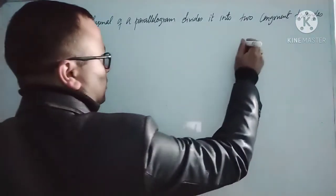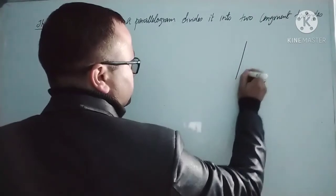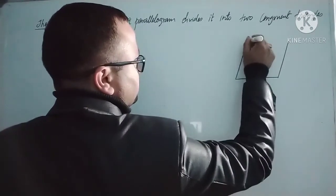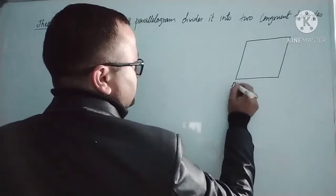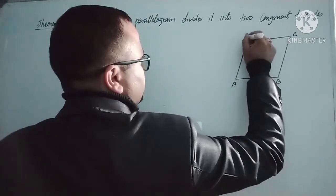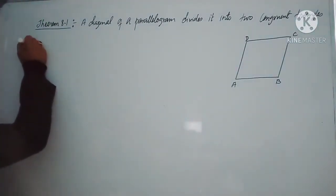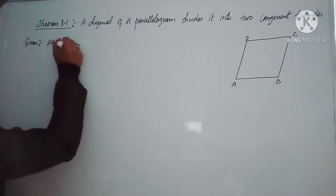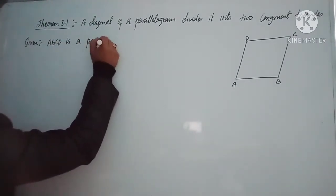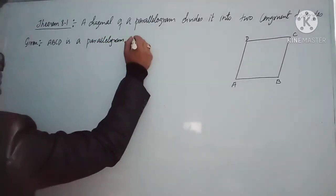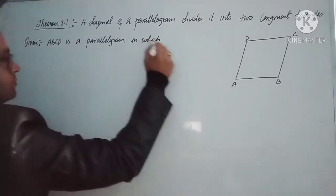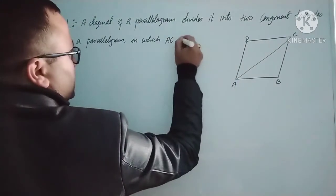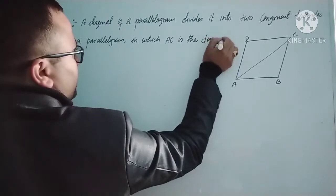First, we have to draw a parallelogram ABCD. This is parallelogram ABCD. Now we write the given statement: ABCD is a parallelogram in which AC is the diagonal.